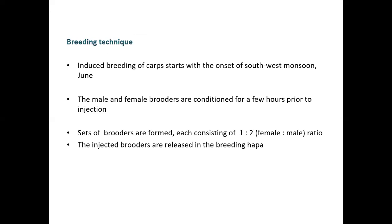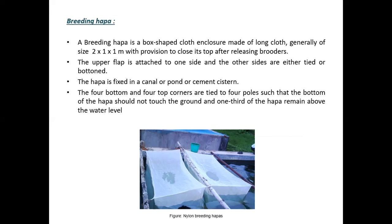Regarding breeding technique, the most preferable season for induction of chemical or hormone is the southwest monsoon, around June. Male and female brooders are conditioned for a few hours prior to induction, and injection sets of brooders are formed — one female and two males per set. The injected brooders are released into the breeding hapa, which is a box-shaped cloth enclosure, generally 2 x 1 x 1 meters in size, with a provision to close its top after releasing brooders. The hapa is fixed in a canal or pond with the upper side closed and the lower side open, placed above the water level.